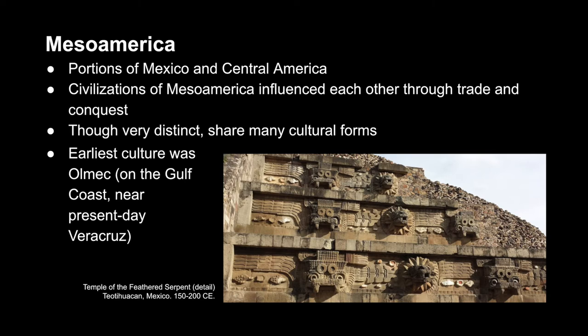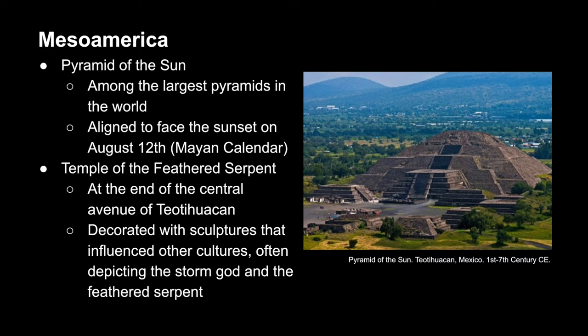The earliest of these cultures was the Olmecs, located on the Gulf Coast near what is now Veracruz. The Pyramid of the Sun in Teotihuacan is one of the largest pyramids in the world, located about 40 miles north of present-day Mexico City. There is an ancient Mexican belief that humanity itself emerged from a hole in the ground and that the cave this pyramid sits on top of could be the site of that origin. Additionally, the pyramid is aligned to face the sunset on August 12th, which is the beginning of the Mayan calendar.